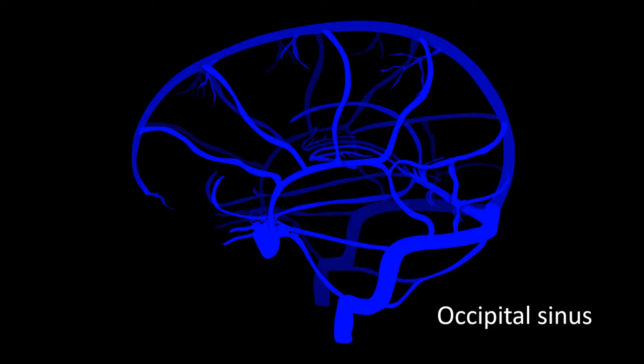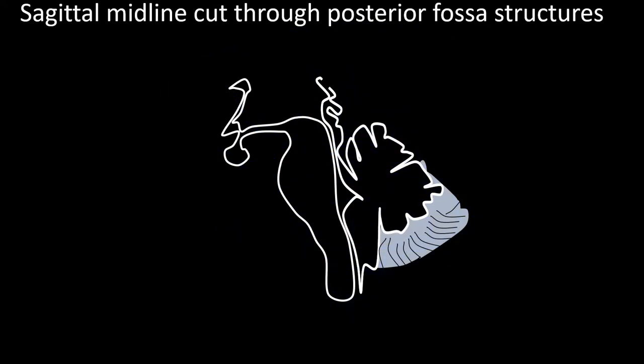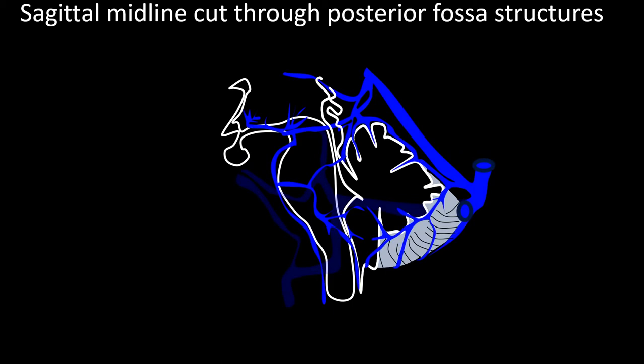Using a different figure, I want to stress that the name and location of these vessels vary greatly from one patient to the other — a fact reflected in anatomy books by the many names and locations given for these vessels. Here I have drawn a sagittal midline cut through the posterior fossa structures to show you the location of the veins and sinuses draining it.